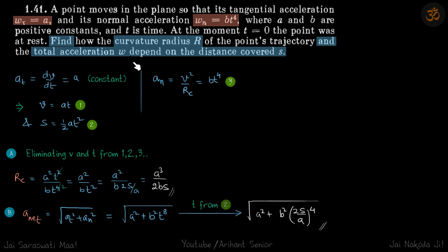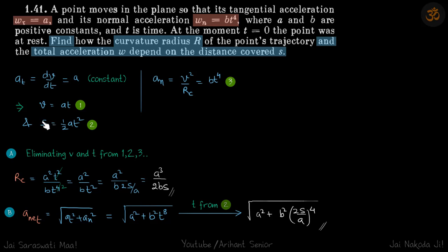For total acceleration, that is √(aₜ² + aₙ²). Since aₜ is constant a, we write aₙ as bt⁴, so aₙ² = b²t⁸. We don't need the term t in the final answer, so from the three equations we use equation 2 to get rid of t and express the answer in terms of s.